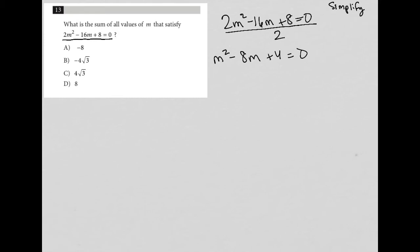And then I can figure out, how do I solve this m squared minus 8m plus 4 equals 0? I like the quadratic formula for this.